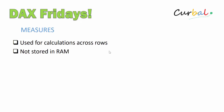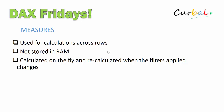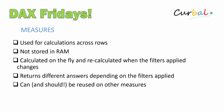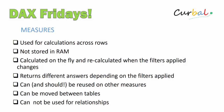Measures are not stored in RAM. That means they are actually calculated on the fly and recalculated when the filter applied changes. So when you open the file it calculates once, and then it recalculates when the user changes how the dashboard looks. It returns different answers depending on the filter applied, and can and should be used on other measures. It can be moved between tables, but cannot be used for relationships.